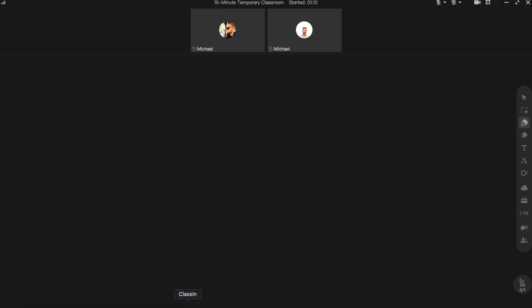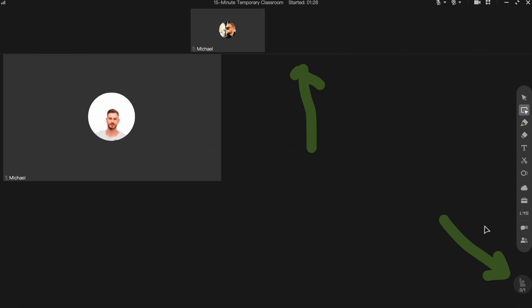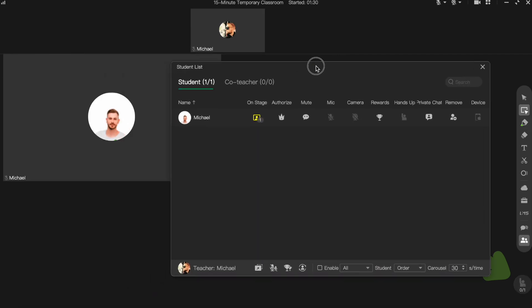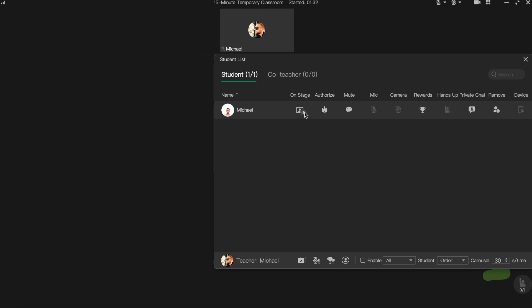For example, students can raise their hand virtually, allowing them to indicate when they have a question or want to participate. This feature mirrors the dynamic of an in-person classroom, making it feel more interactive. Another feature is the ability to bring students on stage. This means you can spotlight a specific student, allowing them to share their screen, talk or write on the blackboard. It's perfect for presentations, group projects or answering questions in real time.